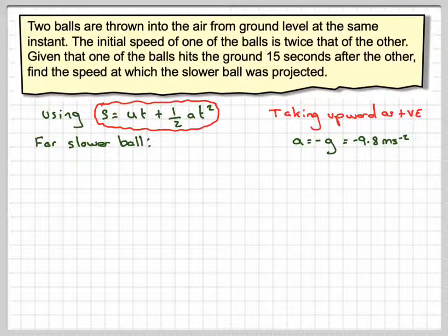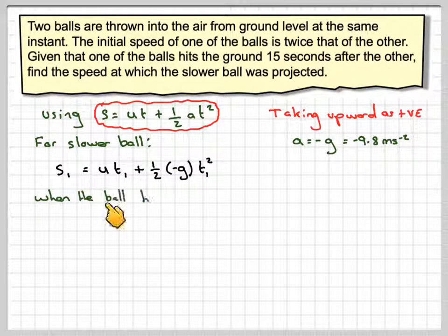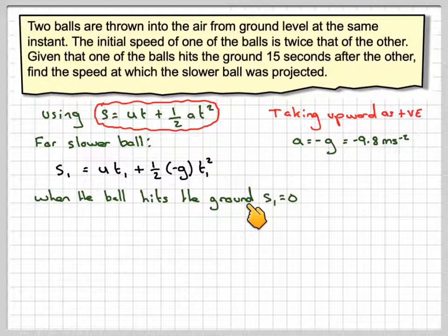We're just going to use g to begin with, and then we'll substitute that in at the end. For the slower ball, s1 will be equal to ut1 plus a half minus g t1 squared. So when the ball hits the ground, the displacement is actually zero, because it's gone up and back down.